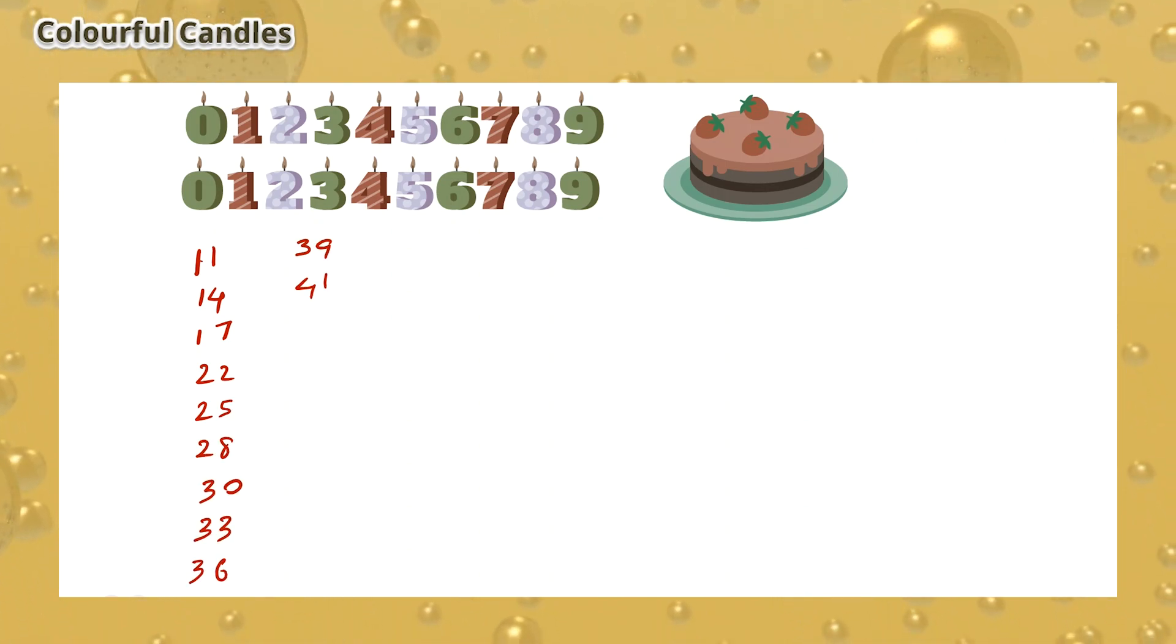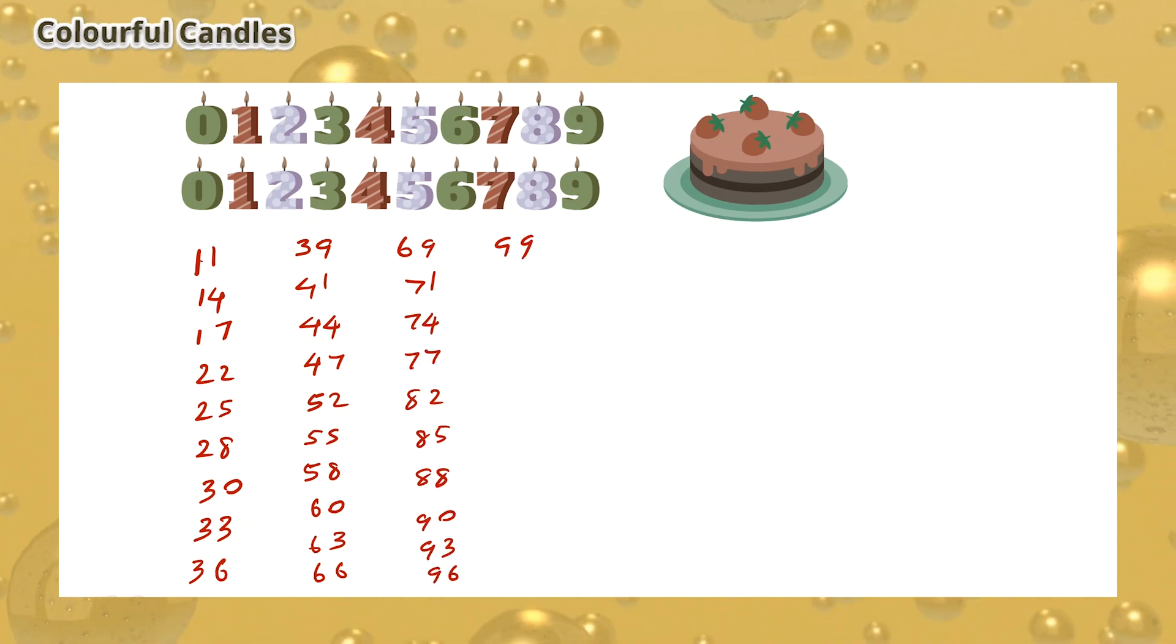As you can see, we can write down the possible numbers that can be made from the same coloured candles. The maximum difference between these numbers is 5. So the maximum weight is 5 years.